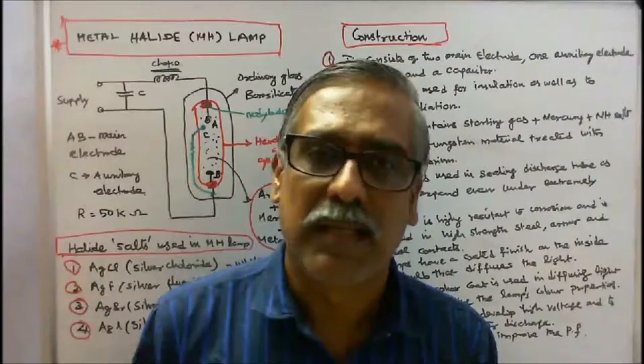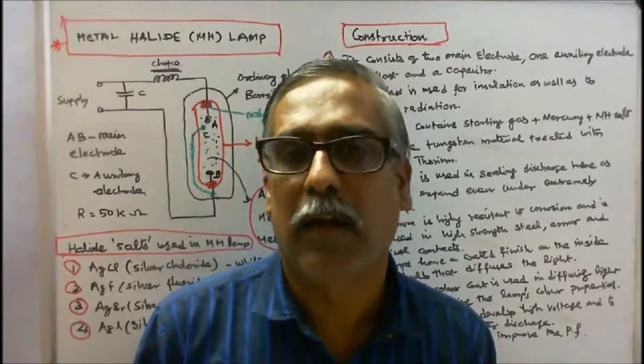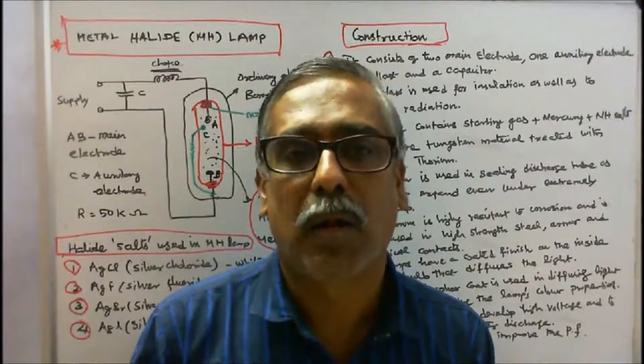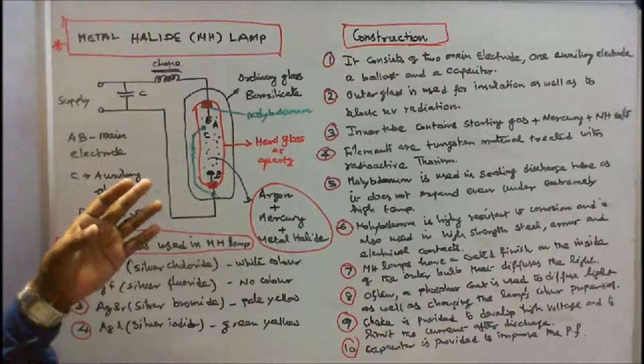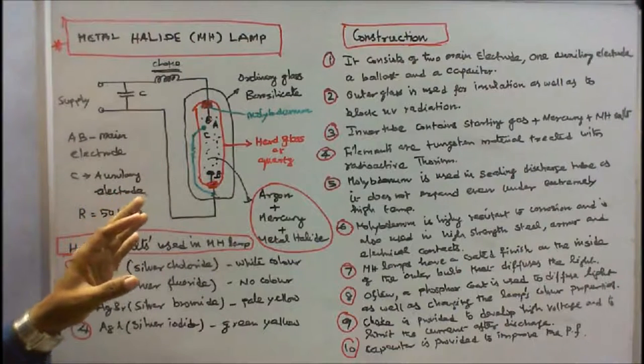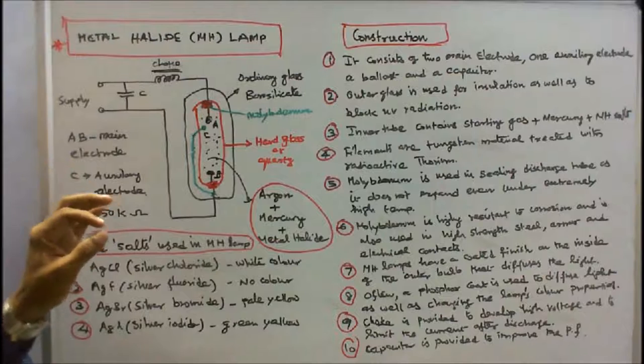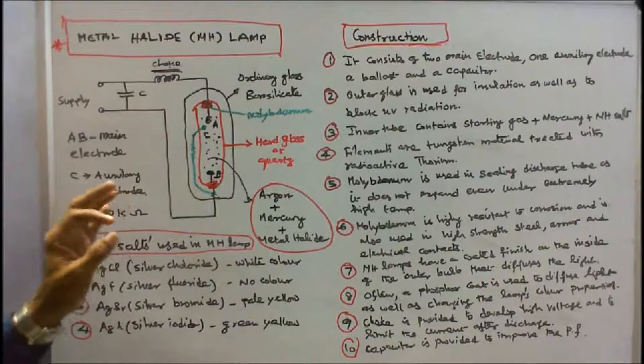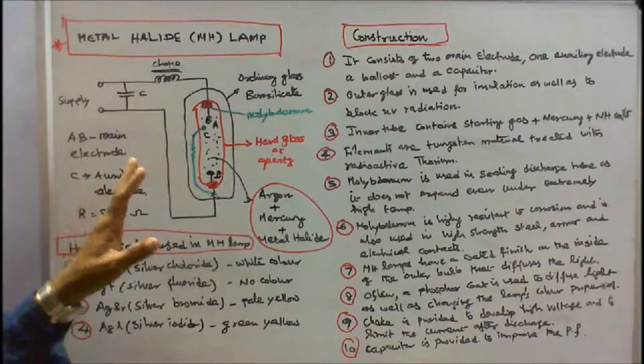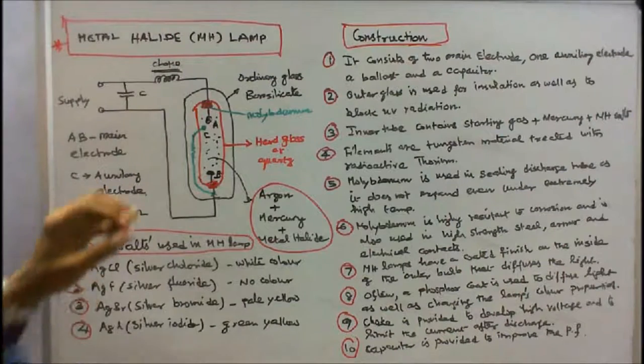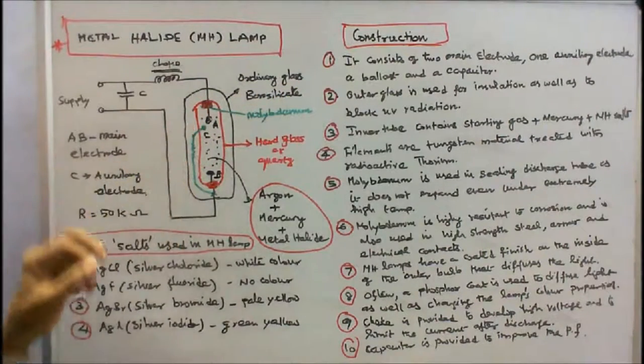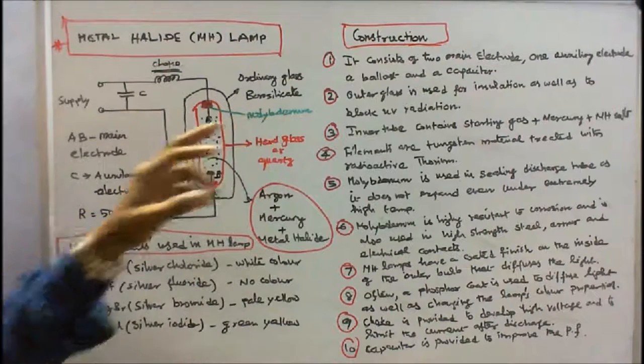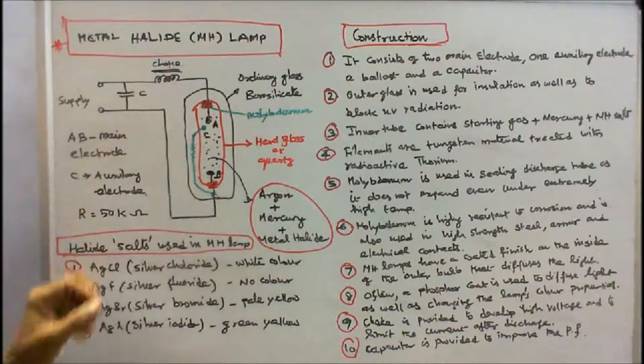Now we will see the constructional detail of a metal halide lamp. This is a figure of a metal halide lamp. Its construction is similar to a high pressure mercury vapor lamp. It consists of two main electrodes AB, one auxiliary electrode C, a ballast choke or high reactance transformer.